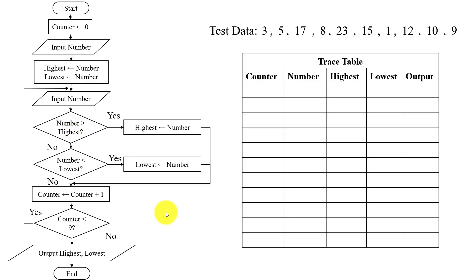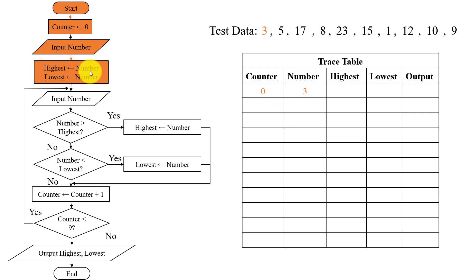Let's start. First of all, start. Then counter equals 0 — we will place 0 here. Then input number: the first number is 3, so 3 will be placed here. Next, highest equals number and lowest equals number, which means 3 will be placed in highest and 3 will be placed in lowest.